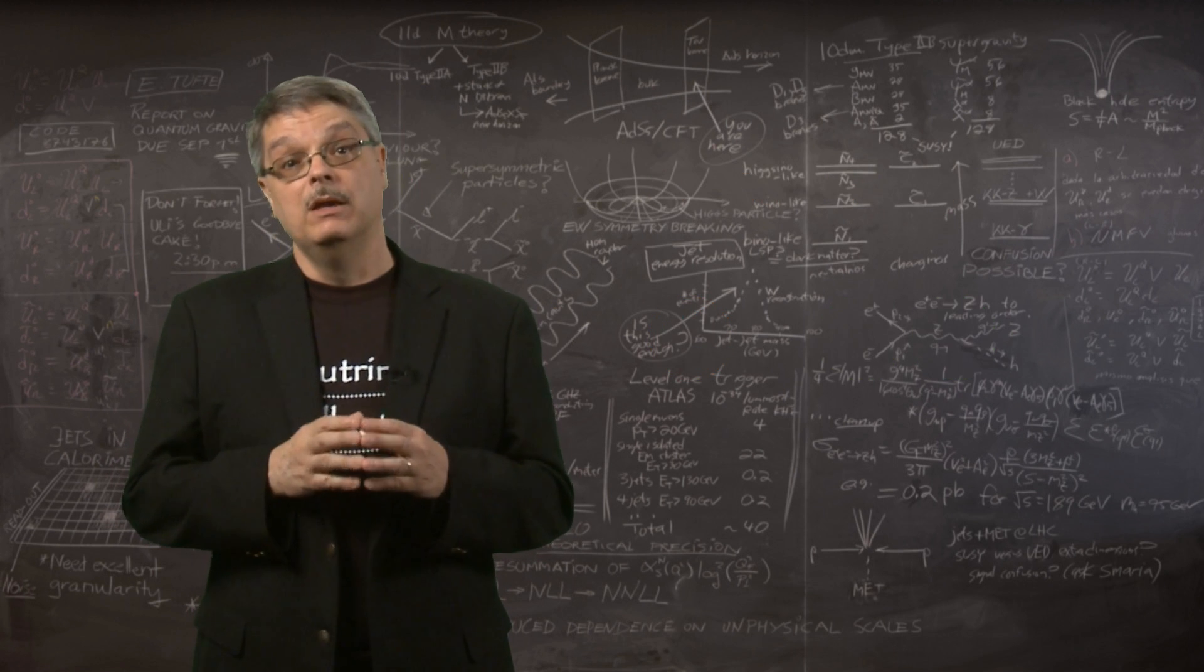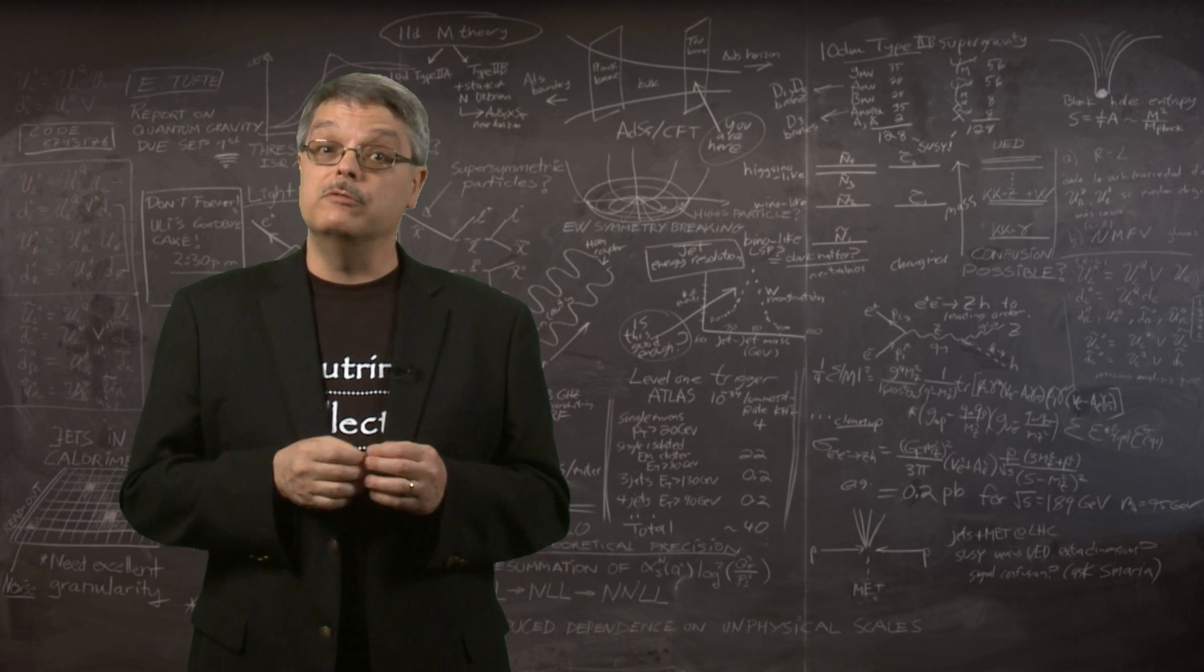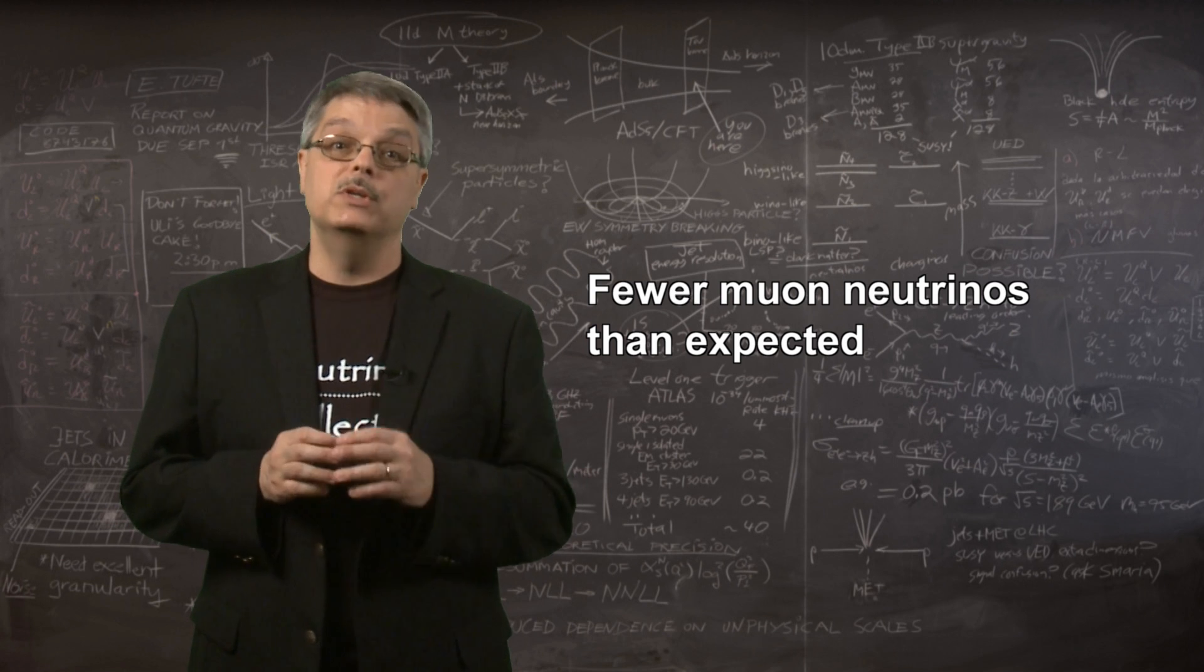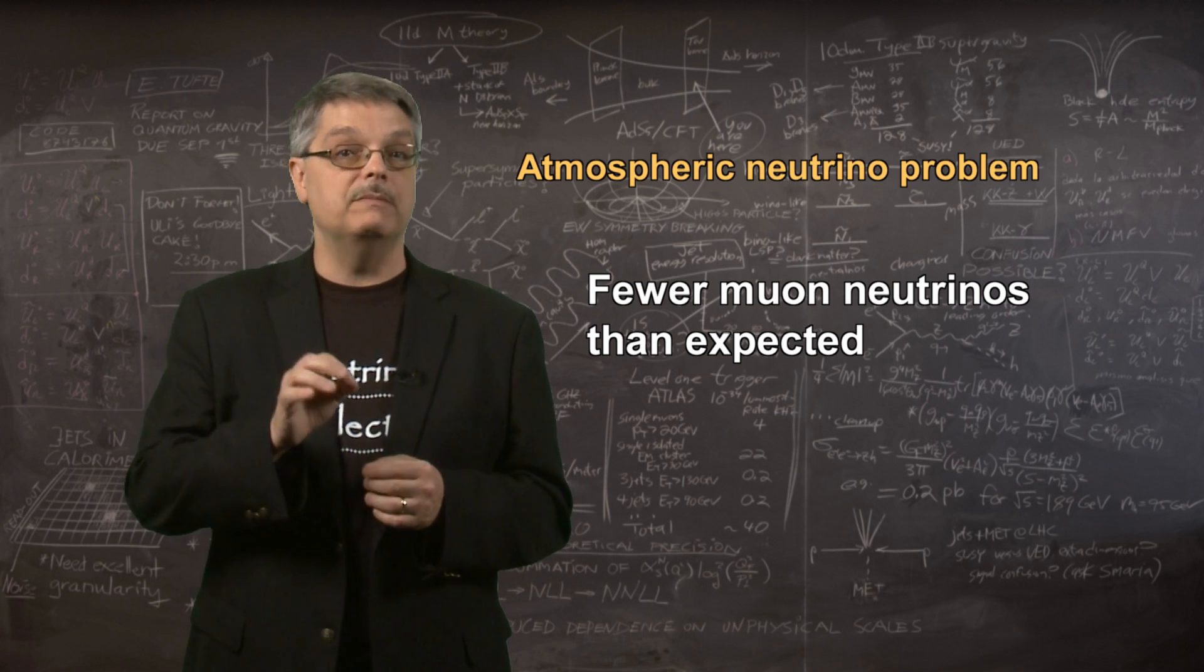So what was measured? Well, different experiments observed different results, but it was generally true that there were fewer muon-neutrinos than expected. Another mystery had appeared, this one called the atmospheric neutrino problem.